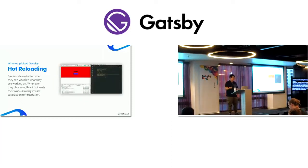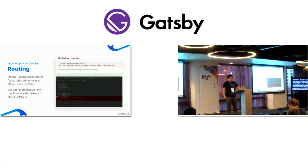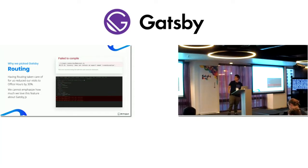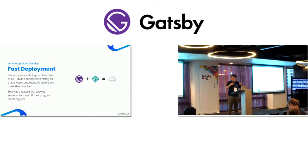Obstacle number two: students learn a lot better when they can visualize what they're working on. With hot reloading, if you make a mistake, it will instantly show you whether this works or doesn't work, which is great for someone who's starting to learn so they can see exactly what their code is doing. Routing is a very, very big reason why we picked Gatsby. Having routing taken care of for us has reduced our visits to office hours by 30%. We cannot emphasize how much we love this feature — it has basically allowed us to scale our bootcamps to offer to more people, because routing was causing so many issues during our office hours. And last but not least: fast deployment. Students are able to push their sites to GitHub and connect to Netlify, so it will automatically build and make their site live. It's a feature that allowed students to show off their progress to their parents, post it on Facebook, and it's very satisfying. That's why we love Gatsby.